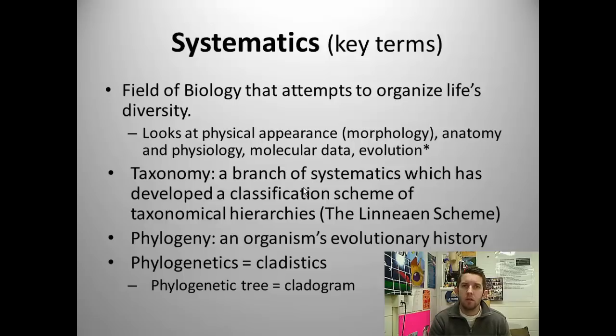Systematics looks at physical appearance, morphology, anatomy and physiology, molecular data, and evolution. It has a lot to do with developing family trees and looking for relatedness of organisms. Systematics tries to delve in and flesh out what's more related to one thing than the other.